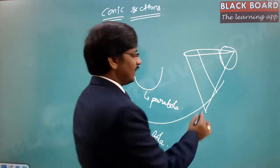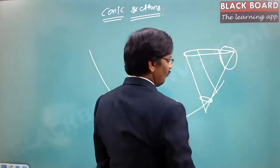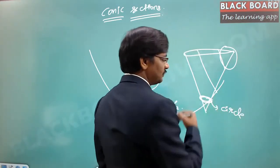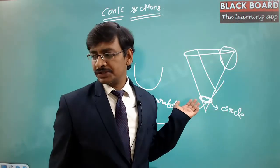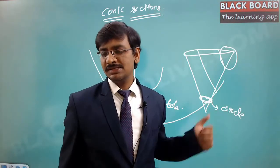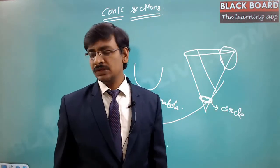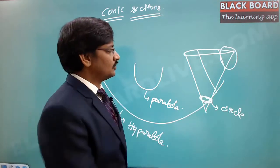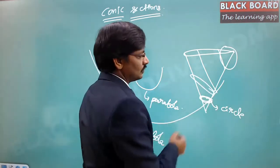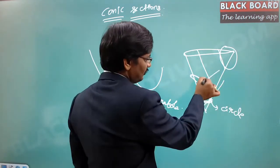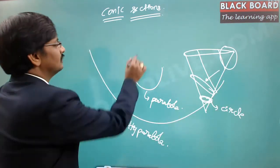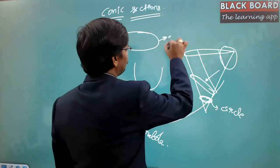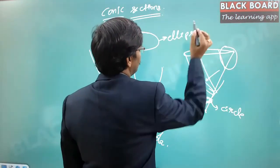If you cut exactly at a particular point and look from the top, the shape you get is a circle. And if you cut slantly and look from the side, the shape you can see is called an ellipse.